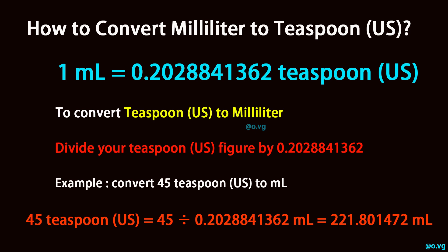Example: convert 45 teaspoon, U.S., to ml. 45 teaspoon, U.S., equals 45 divided by 0.2028841362 milliliters, which equals 221.801472 milliliters.